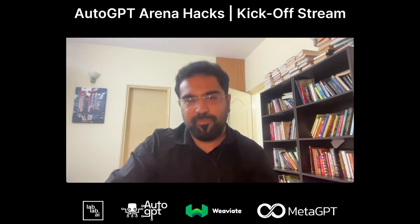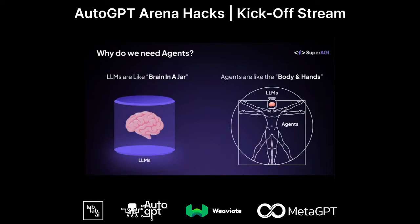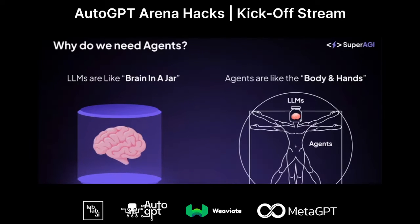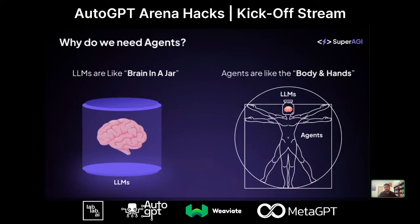Thanks a lot. Hi guys, I'm Ishan, one of the creators of Super AGI. Before I talk about Super AGI, I wanted to talk about why we really need agents. LLMs are one of the most profound technologies to come up in the last 100 years, but they're great at thinking and very bad at acting — they are a brain in a jar. That's when you need agents: they are the body and the hands that work in conjunction with LLMs to help them do useful work.